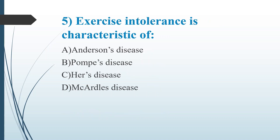Fifth question: Exercise intolerance is a characteristic of — Option A: Anderson's disease. Option B: Pompe's disease. Option C: Hers' disease. Option D: McArdle's disease. The answer is Option D, McArdle's disease. McArdle's disease is a genetic disorder that mainly affects skeletal muscle; it is glycogen storage disease type 5.